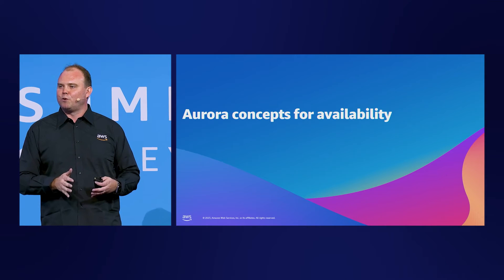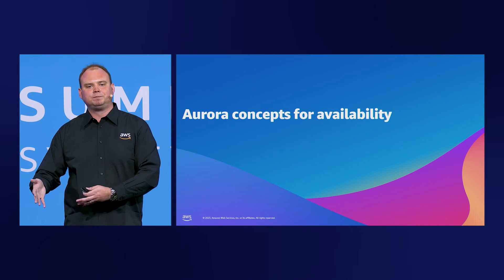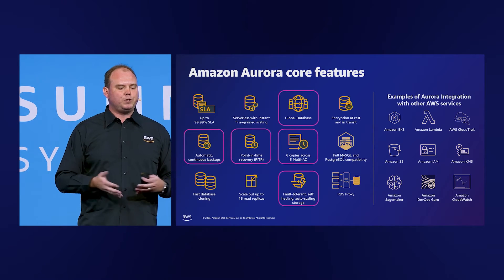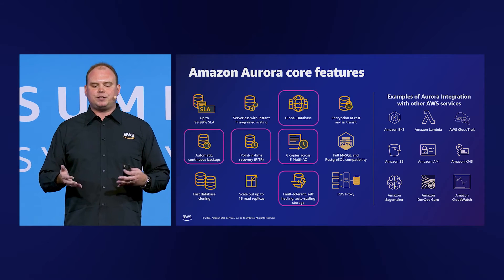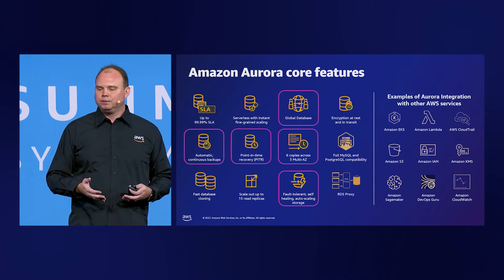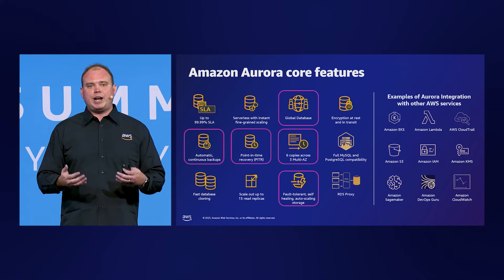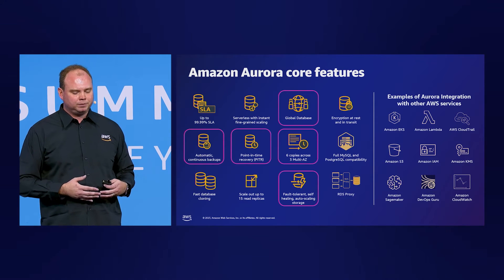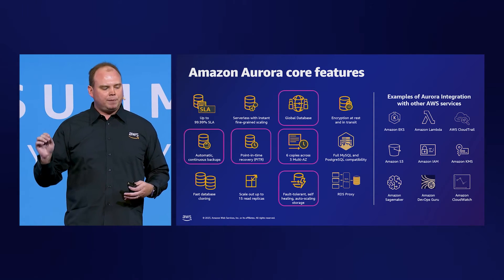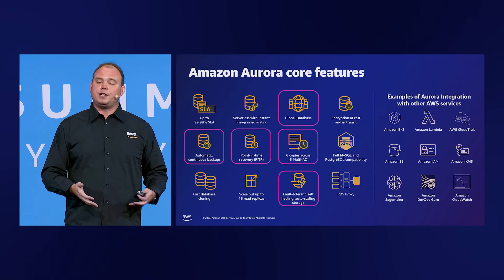Let's get into the thick of it with Aurora. We'll start with single-region concepts using multiple availability zones, then progress into multi-region design. Aurora offers a purpose-built database solution for organizations to future-proof their applications. AWS database services handle management tasks like server provisioning, patching, and backups, allowing teams to focus on value-added work. Enterprises are leveraging AWS migration programs to optimize migrations, with over 800,000 databases migrated so far. Key features we'll cover include global databases, point-in-time recovery, automated and continuous backups, and fault-tolerant, self-healing, auto-scaling storage.